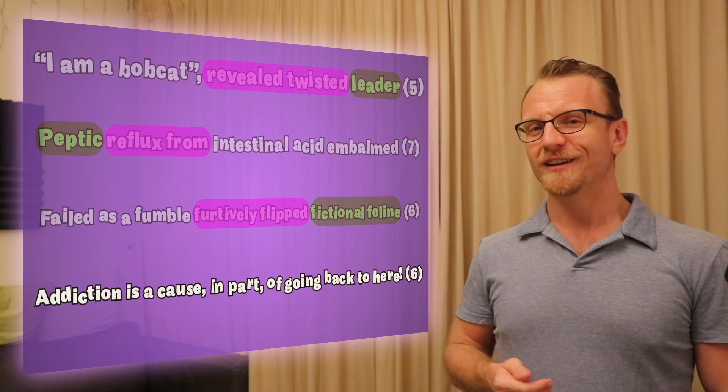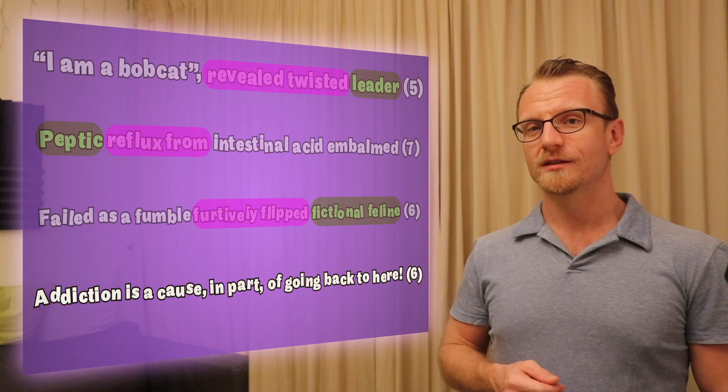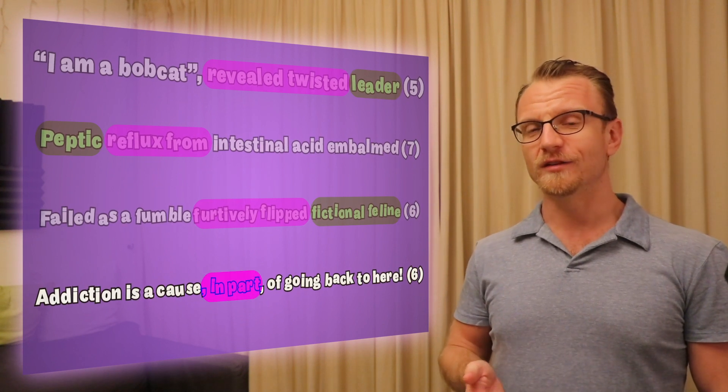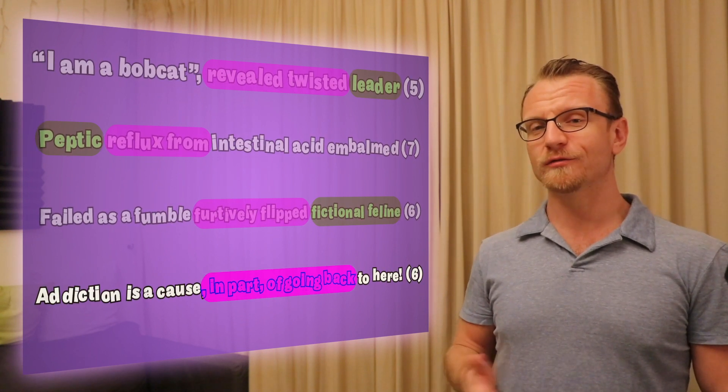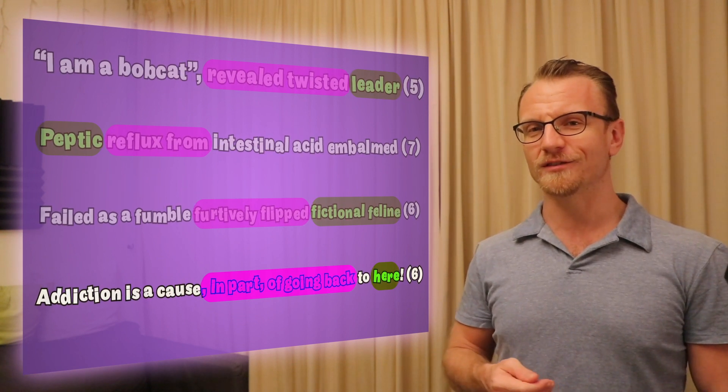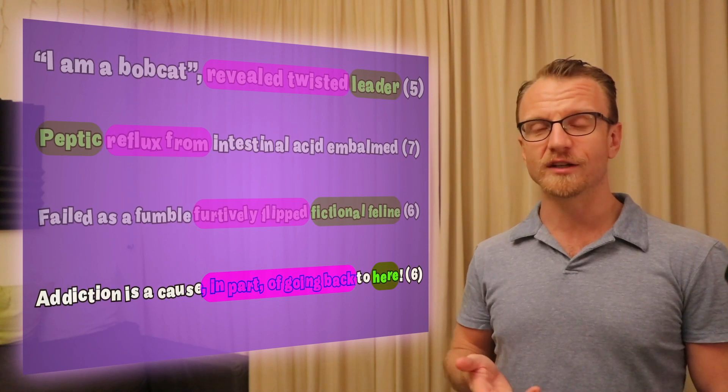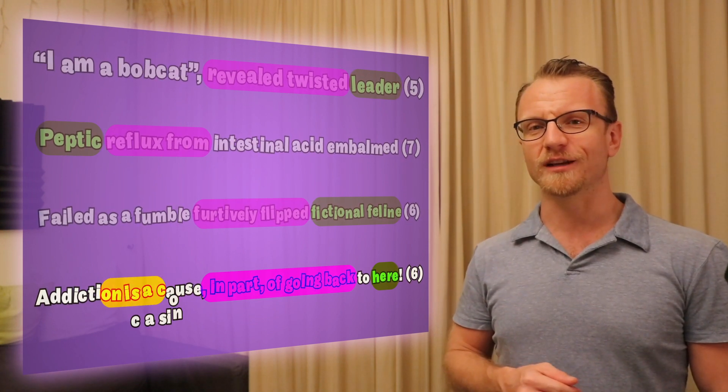This last one's my favorite. Addiction is a cause, in part, of going back to here. So we've got to find a part of this clue, going back, which refers to here, which is somewhere addiction keeps you coming back to. You might say that the entire clue also acts as a definition on its own. So keep that in mind for a later video.